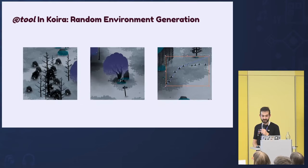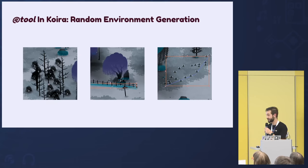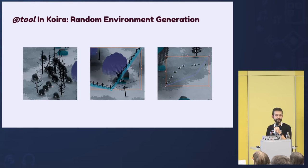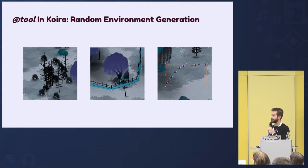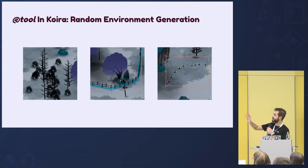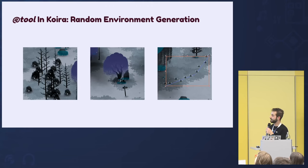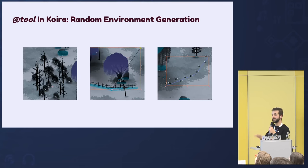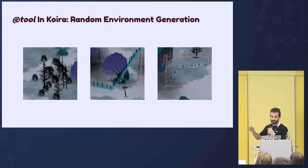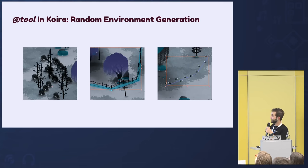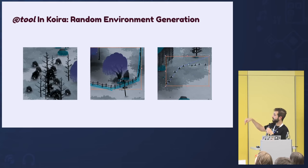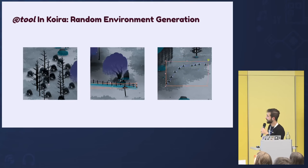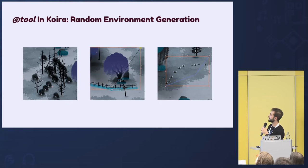You can also use @tool for random environment or content generation. On the left, we just have a bunch of trees — you specify a radius, say "make something," and if you're happy you can lock the generation so it stays that way forever. We also do this with fences, where you draw a path and it places posts, connects them, and builds the whole collision too. You can do this with other scenes as well, like flowers.